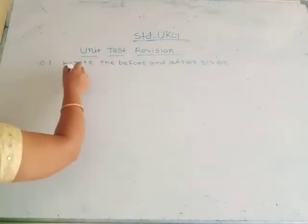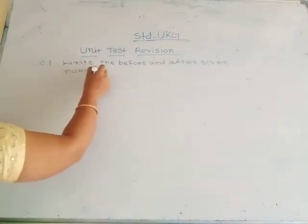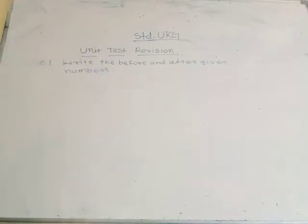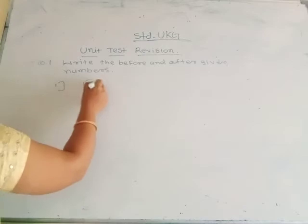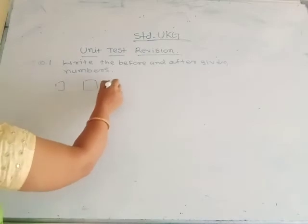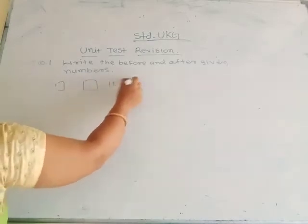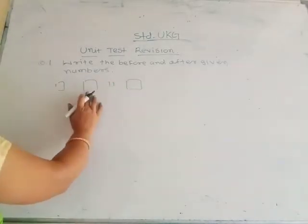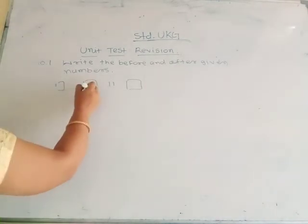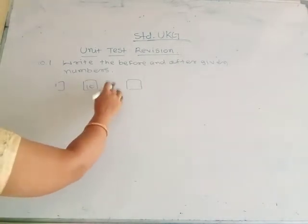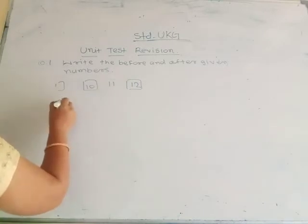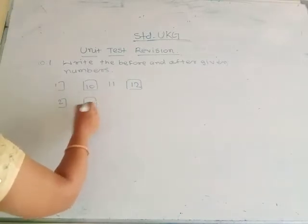Here are some numbers given and you write the after and before number. First one: here is 11. There is one box. Before 11 which number? 10. And after 11 which number? 12. In this type, in homework you complete this.